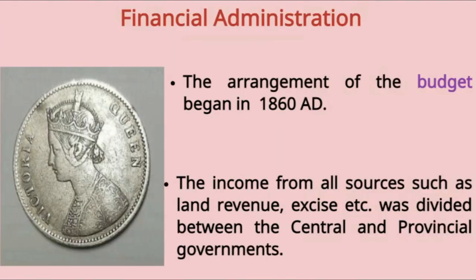After 1857, financial administration was also reconstituted. The arrangement of the budget began in 1860. The income from all sources such as land revenue, excise, etc. was divided between the central and provincial governments.